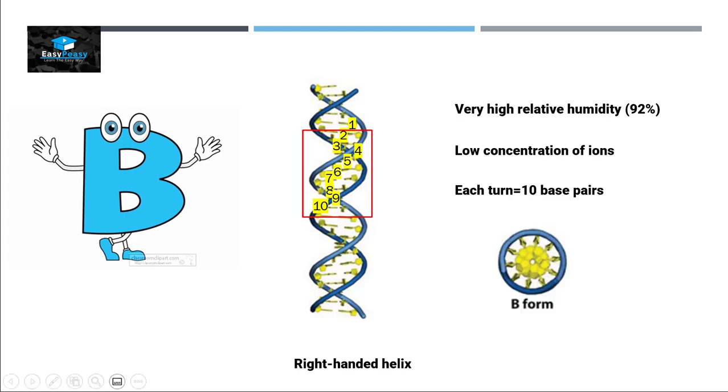If we look at the top view, you can see that this blue portion is basically the sugar and phosphate backbone, while the yellow or greenish portion is basically the nitrogenous bases, and they are perpendicular to the axis. The hydrogen bonds formed between the nitrogenous bases have a little angle here, and that is called base tilt. Base tilt in B form is 6 degrees only.